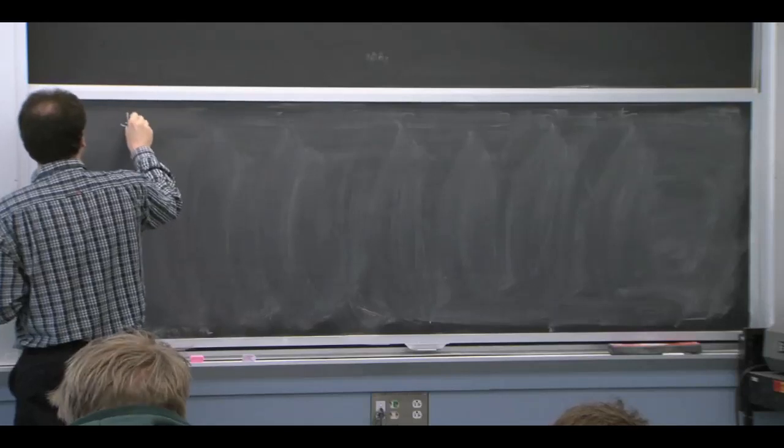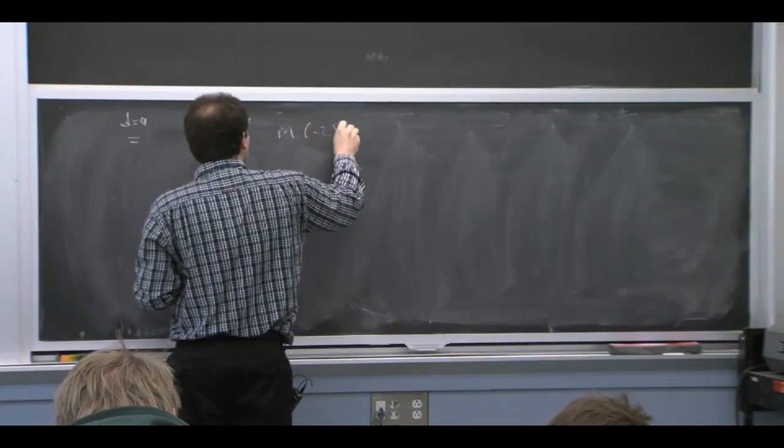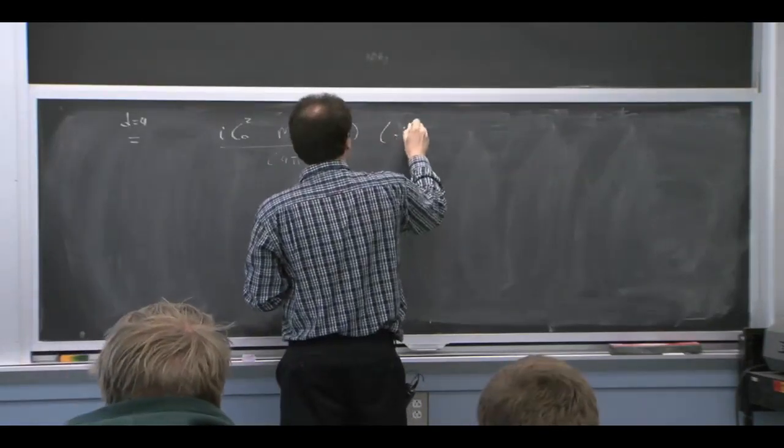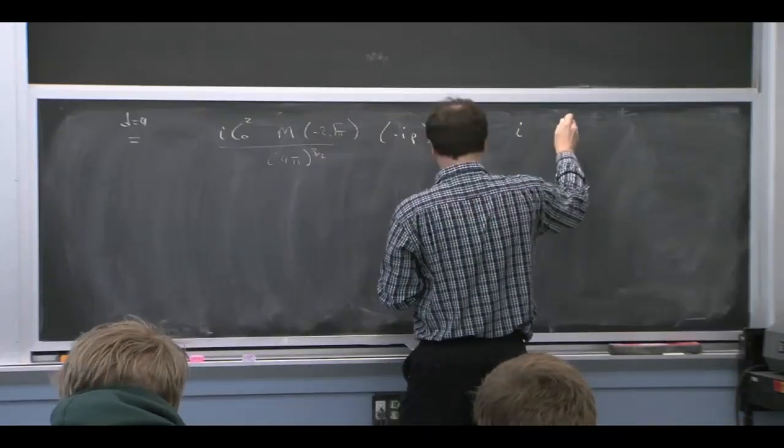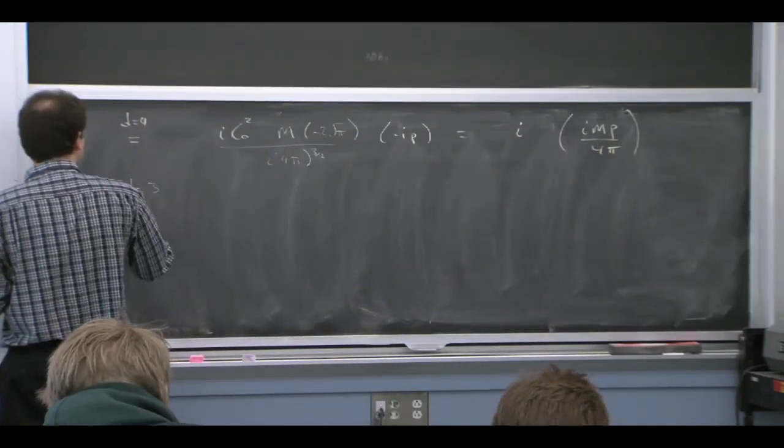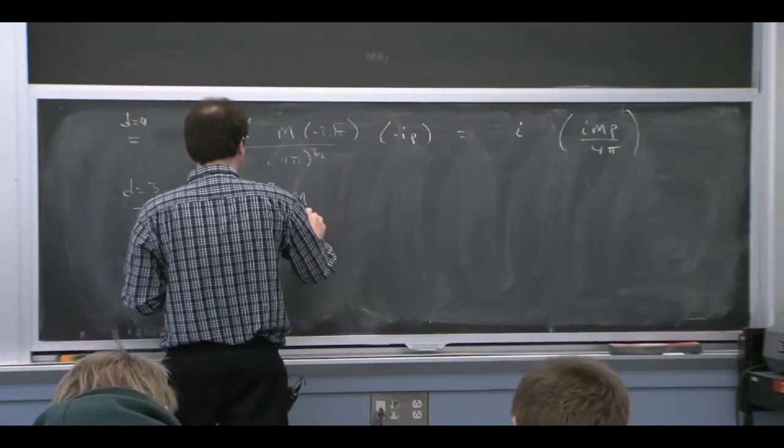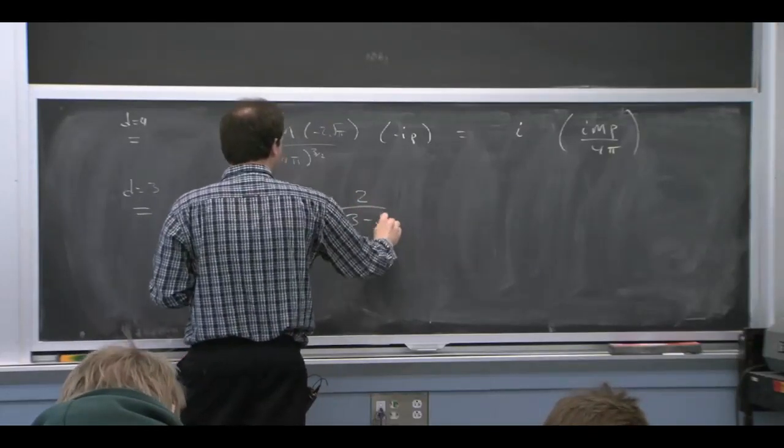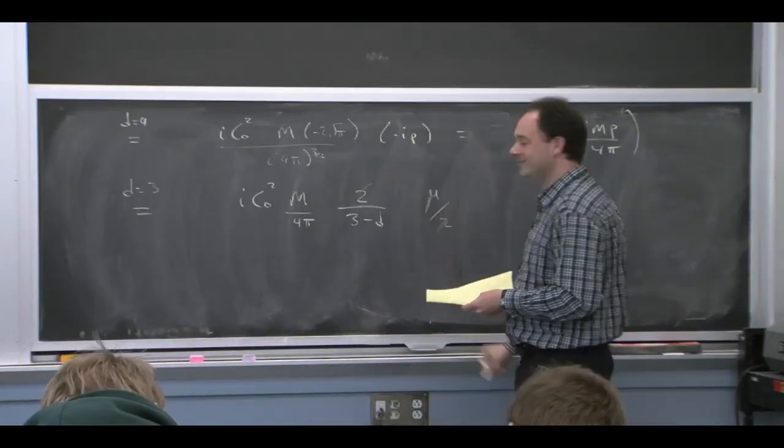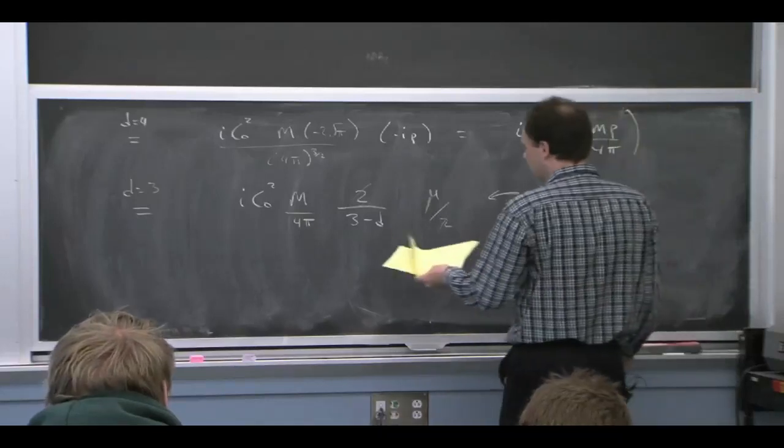So now look at d equals 4. In d equals 4, there's a bunch of factors. This is just giving the answer I quoted to you before. It's just something finite. And if we look at d equals 3, then we have a pole because of that gamma function. And I put the 2 in here just to cancel out 2.